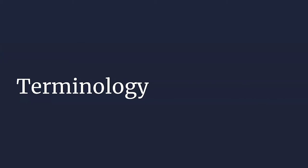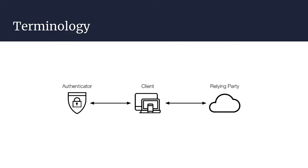When we talk about WebAuthn and FIDO2, we talk around three definitions — three different entities that are the roots for all of this work. There's an authenticator, a client, and a relying party. Generally, I'm assuming you and I are the relying party. The relying party is going to be a website or web application — it's in charge of talking with the client and the authenticator to do WebAuthn and FIDO2. The client is going to be a browser running on a laptop, mobile device, or desktop.